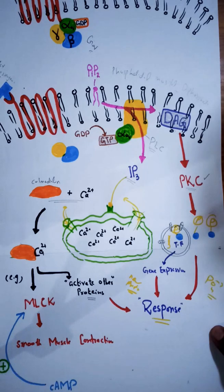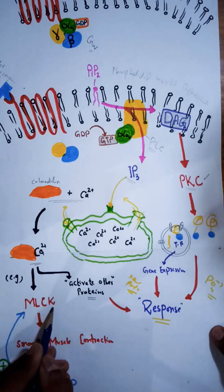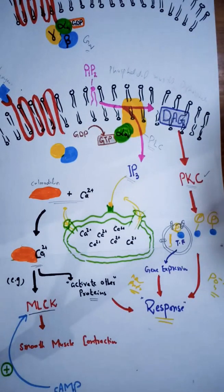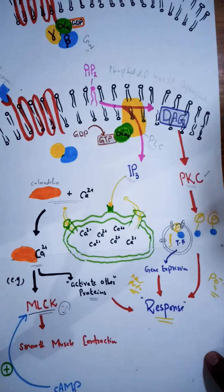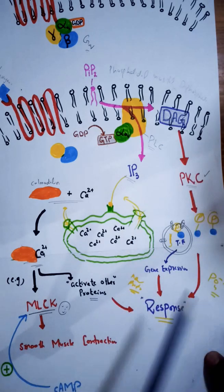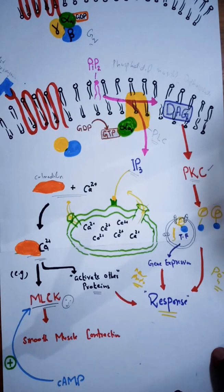The calcium-calmodulin complex can activate other proteins and produce a response. For example, in smooth muscles, this calcium-calmodulin complex activates myosin light chain kinase. When myosin light chain kinase is activated, smooth muscle contraction takes place. This pathway — involving IP3 and DAG — is the pathway followed by the GQ protein coupled receptor after the attachment of any ligand, hormone, or neurotransmitter.